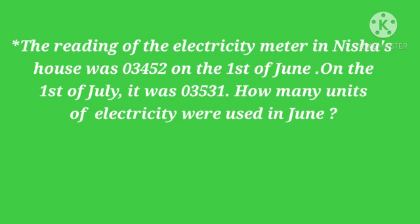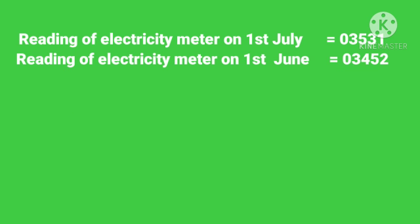Next: The reading of the electricity meter in Nisha's house was 3452 on the 1st of June. On the 1st of July it was 3531. How many units of electricity were used in June? You have to take the bigger number minus the smaller number. Reading on 1st July is equal to 3531. Reading on 1st June is equal to 3452. So 3531 minus 3452.